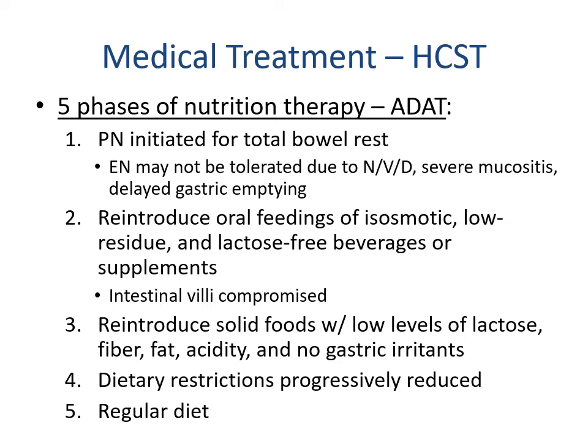The five phases of nutrition therapy for advancing diet in GVHD begin with initiating parenteral nutrition for total bowel rest when enteral nutrition is not tolerated due to severe nausea, vomiting, and mucositis. The second step is to reintroduce oral feeds using isoosmotic, low-residue, lactose-free beverages or supplements — essentially low-fiber, lactose-free formulas — recognizing that absorption will be reduced due to intestinal damage.